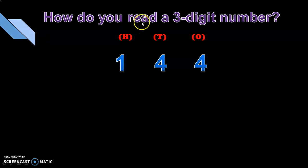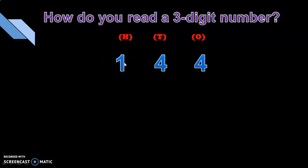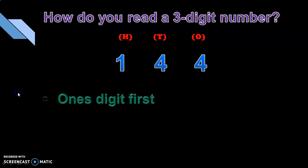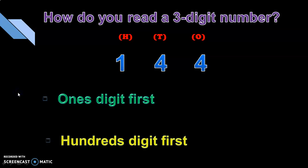How do you read a 3-digit number? Consider this 3-digit number 144. Here, 4 is in the 1s place, another 4 is in the 10s place, and 1 is in the 100s place. How do you read a 3-digit number? Will you start reading it from the 1s digit first, or do you start reading it from the 100s digit first?